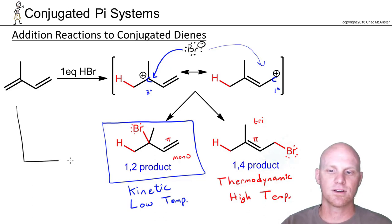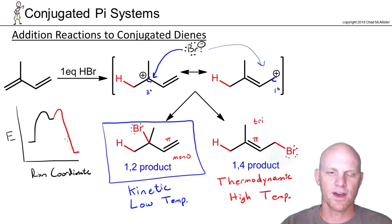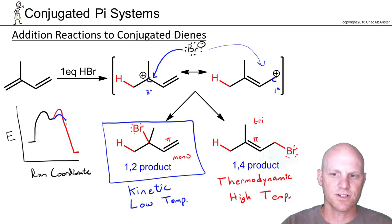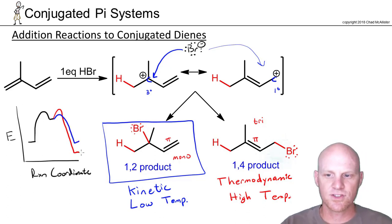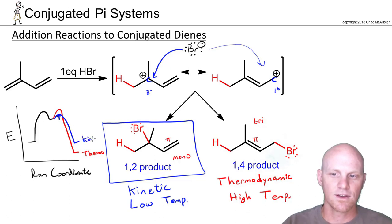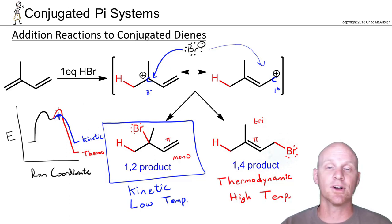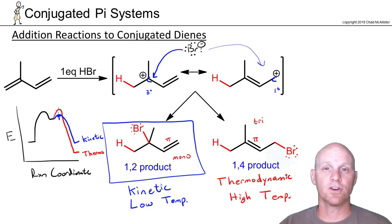On a reaction coordinate diagram, both pathways share the same first step — forming the same carbocation intermediate. From there, one pathway has higher activation energy but leads to a lower energy product (thermodynamic product), while the other has lower activation energy but leads to a higher energy product (kinetic product). If kinetic and thermodynamic products are ever the same, the diagram would show the lowest activation energy also leading to the lowest overall energy product.